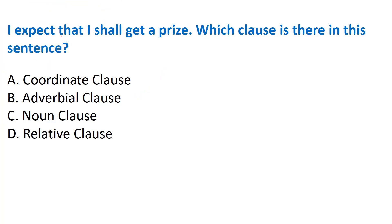Next question: 'I expect that I shall get a prize - which clause is there in this sentence?' Options: A) Coordinate clause, B) Adverbial clause, C) Noun clause, D) Relative clause. Clauses are very important in grammar for DSSSB PGT exams. The correct answer is Option C - Noun clause.